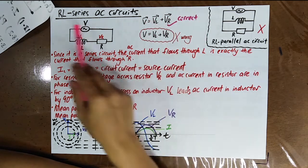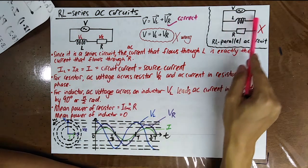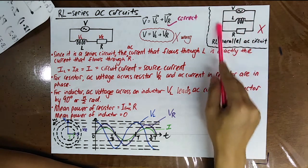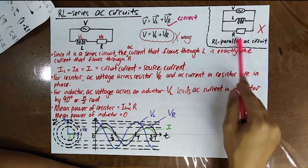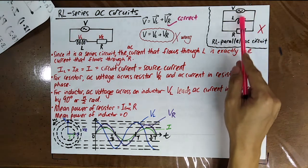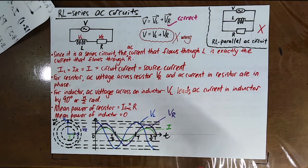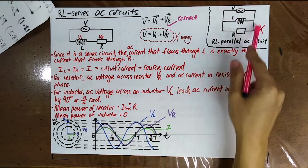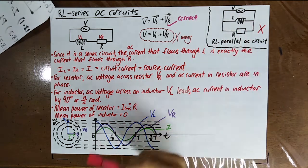This is called the RL series circuit, meaning R and L are in series. The RL parallel alternating current circuit is not studied here, because parallel arrangements require imaginary numbers where I equals the square root of negative one, which is not in the STPM syllabus.